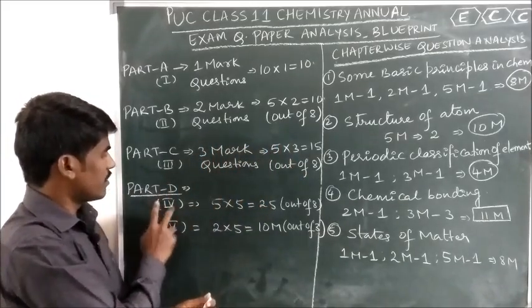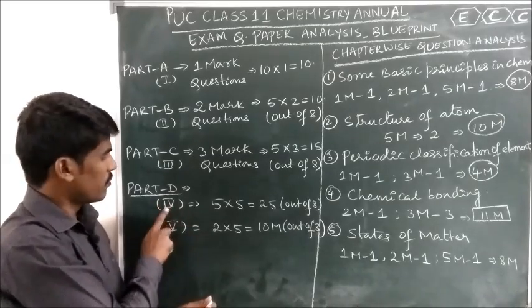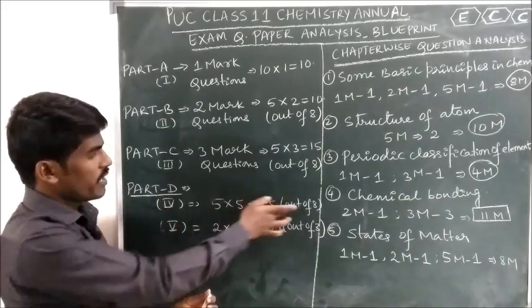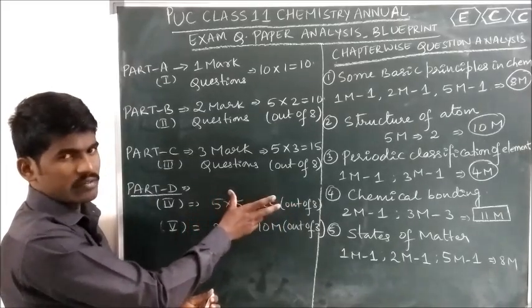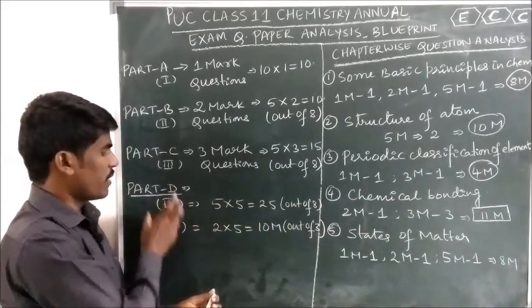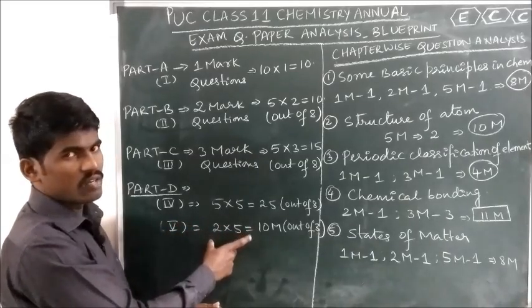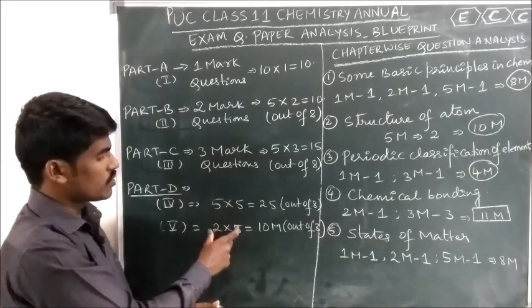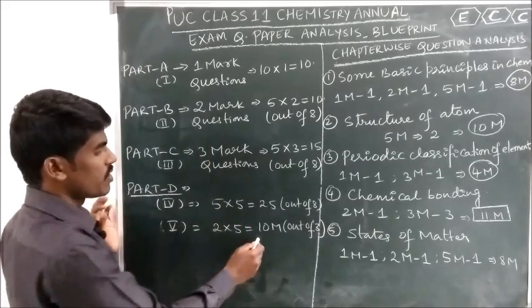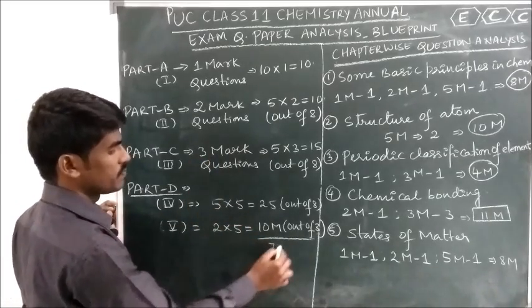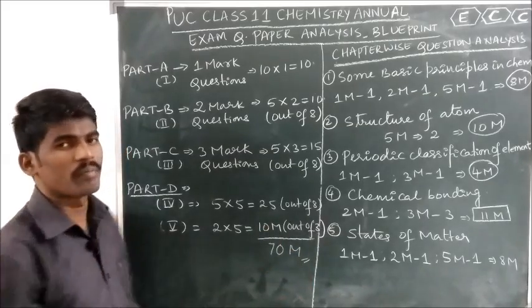Part D has 2 subdivisions. In Part D Roman IV, out of 8 questions, you need to attempt only 5 — that is 5 × 5 = 25. In Part D Roman V, 3 questions will be given and out of 3, you need to attempt 2. So the total paper is of 70 marks, and the remaining 30 marks is for Practical.